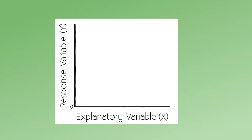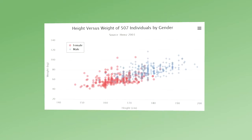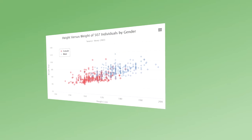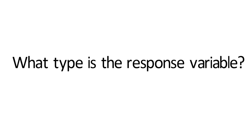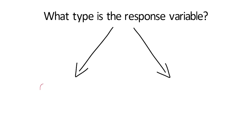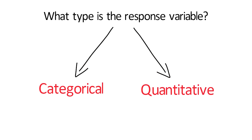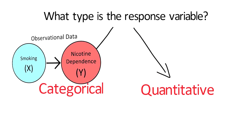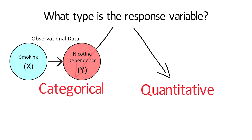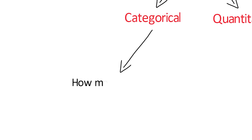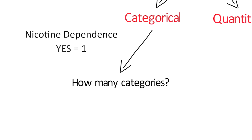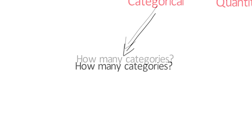Before we actually construct our graph, there are a few questions we need to ask about the types of explanatory and response variables we'll be working with. The first question is: what type is the response variable — is it categorical or quantitative? For our sample research question, the response or dependent variable is nicotine dependence, which is categorical. Next, we need to determine how many categories are in this response variable. Since nicotine dependence is coded 1 for yes or present and 0 for no or absent, we have two categories in the response variable.